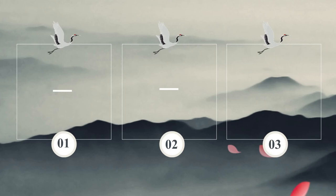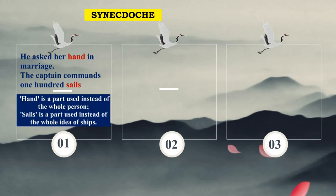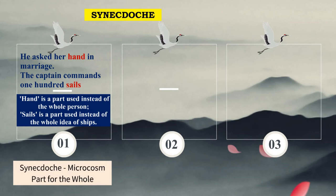We move on to synecdoche, which has two types. The first: 'He asked her hand in marriage' — he actually asked to marry the entire person, but we say her hand. So hand, a part, stands for the entire person. 'The captain commands 100 sails' — sails are actually 100 ships; sails is part of ships, so it is part for the whole. This is called the microcosm type of synecdoche.